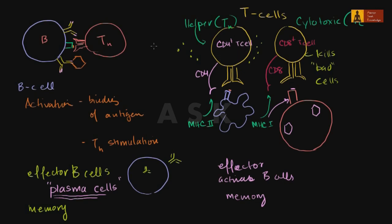So the helper T-cell is the alarm ringer, while CD8 cytotoxic T-cells in their effector mode kill cells. In memory mode, there are many more copies of these cells than originally existed, so that in the future if the same threat occurs, they'll be activated faster because they'll be encountered faster.